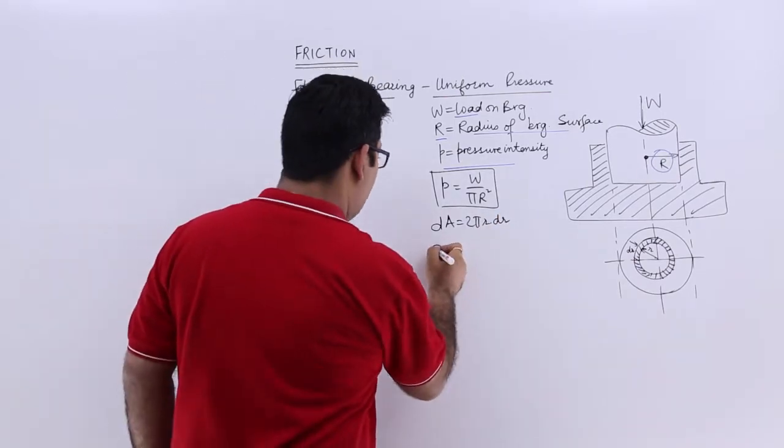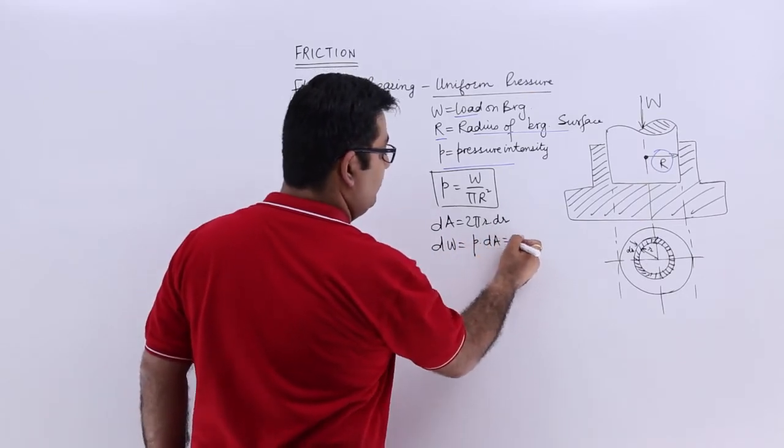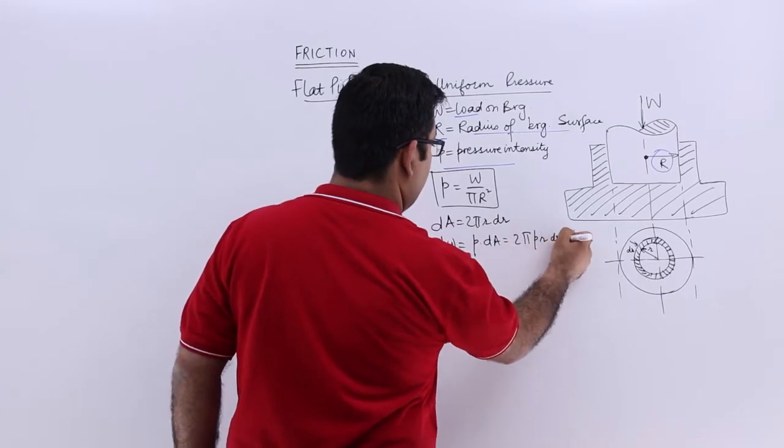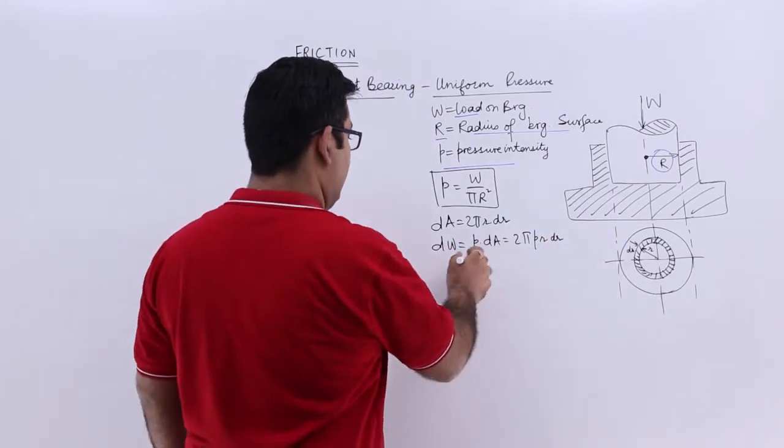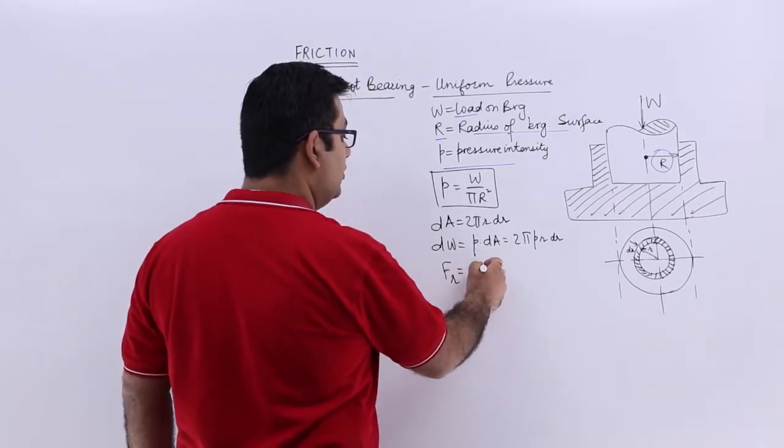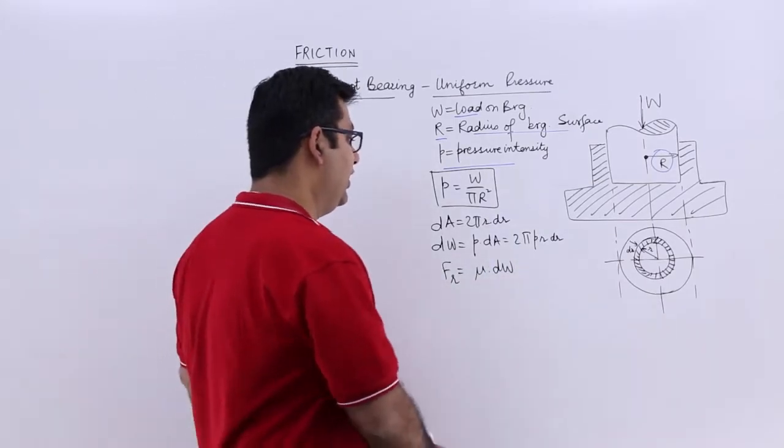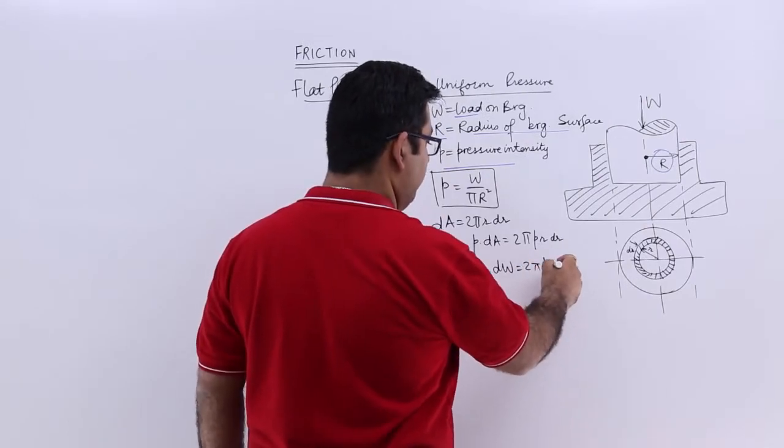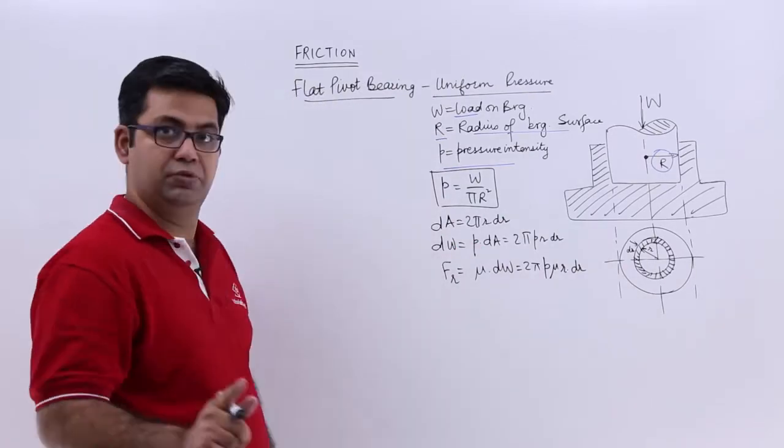So the load on this would be dW, which is equal to P into dA, which will give you 2 pi into P into r dr. So this is your dW. Now the frictional force on this ring would be mu into the load on this dW. So you will get 2 pi P mu r dr. That's the frictional force.